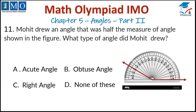Question number 11: Mohit drew an angle that was half the measure of the angle shown in the figure. What type of angle did Mohit draw? This angle is 150 degrees, which is an obtuse angle. So make it half: 150 degrees divided by 2 gives 75 degrees, which is less than 90 degrees, so it is an acute angle. This is option A, so option A is correct.